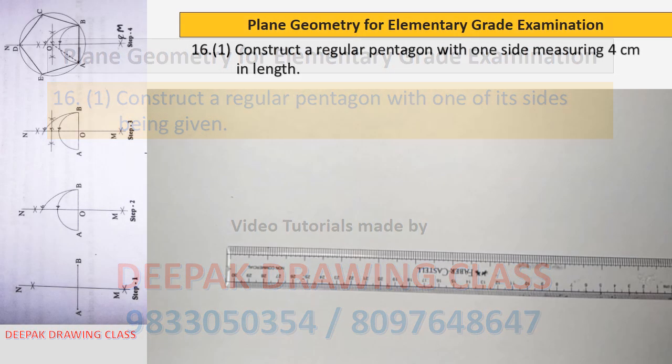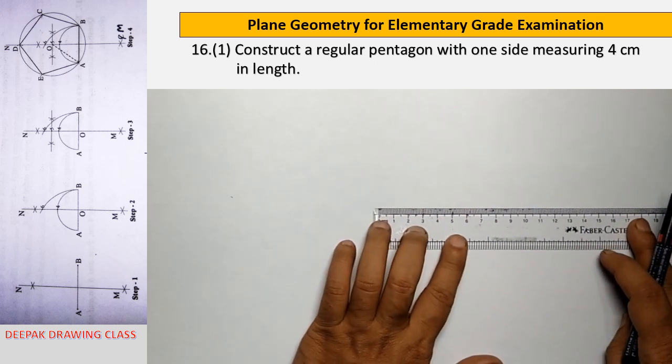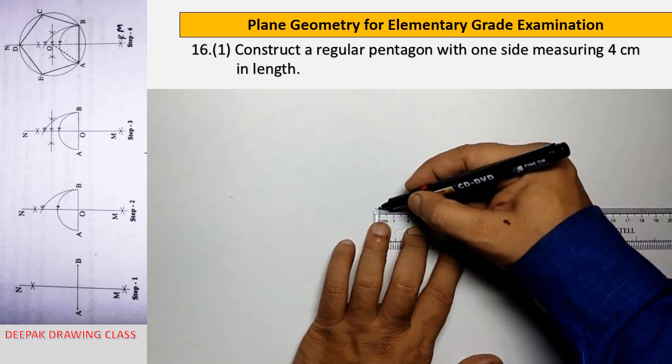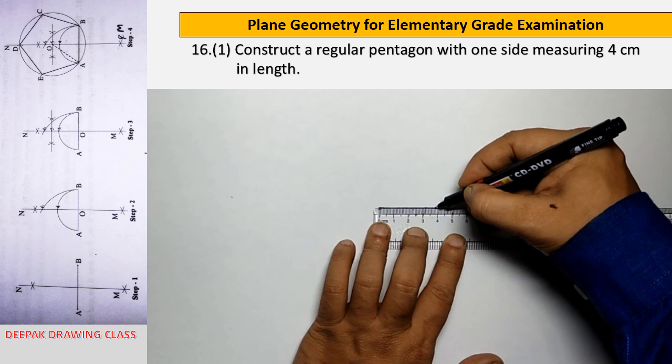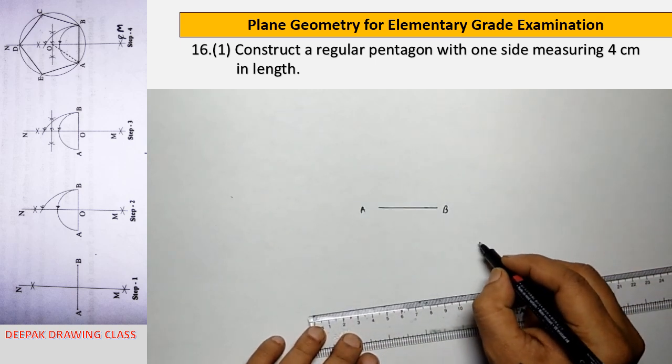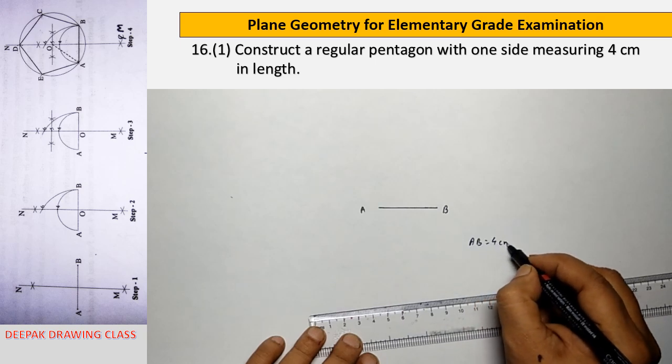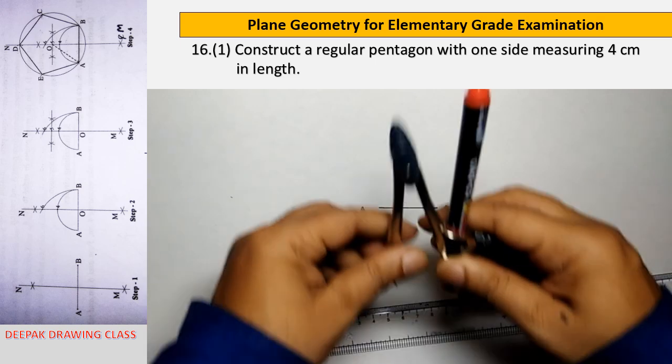Hello friends, welcome to Deepak Drawing Class. Today we will learn some basic constructions of plane geometry for elementary grade examination. Our sixteenth construction is divided into two parts. Construction 16.1 is how to construct a regular pentagon with one of its sides being given.